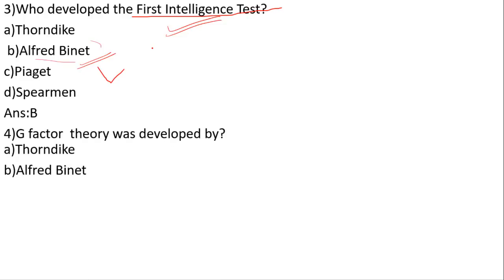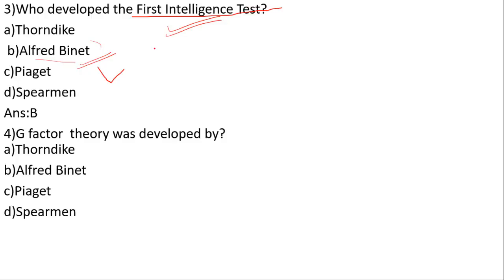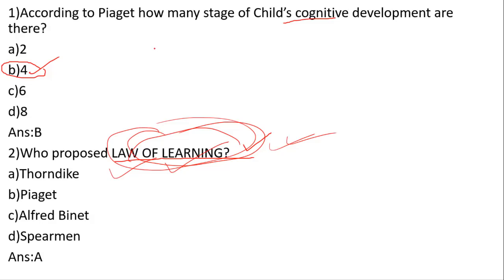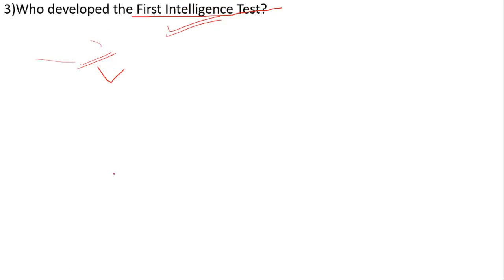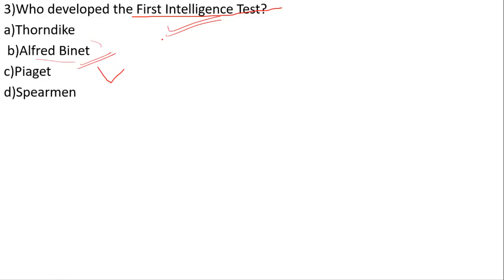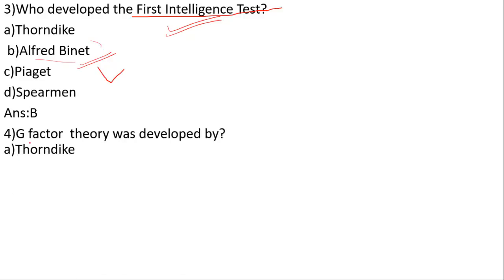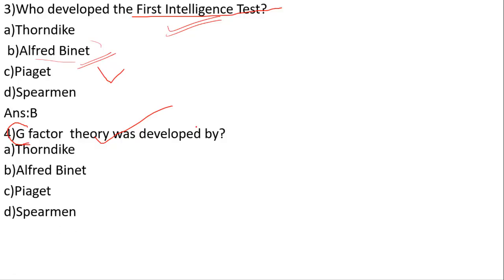G-factor theory was developed by whom? Options: Thorndike, Binet, Piaget, Spearman. To remember: cognitive development is Piaget, law of learning is Thorndike, first intelligence test is Alfred Binet, and G-factor theory is Spearman.